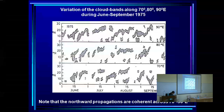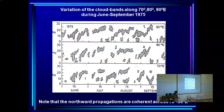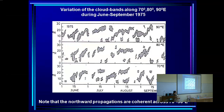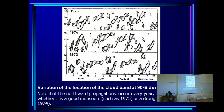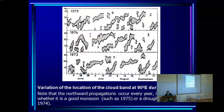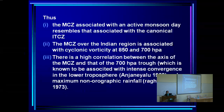A simpler version of the same data shows the cloud band at 70, 80, and 90 degrees East, and you see coherent movements — the band moves northward coherently across Indian longitudes, not as a single synoptic blob but as a whole-band northward movement. Notably, 1974 was a poor monsoon and 1975 was a good one, yet northward propagations occur irrespective of whether it is a drought or a good monsoon — it is an inherent feature of the system.